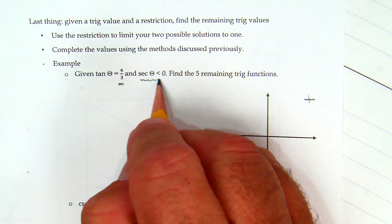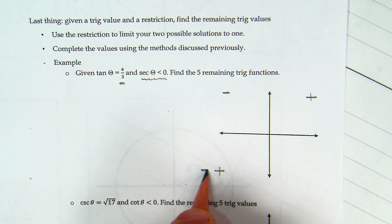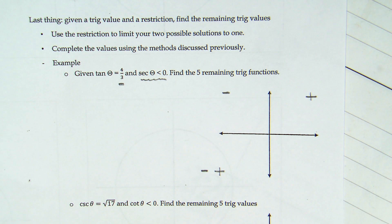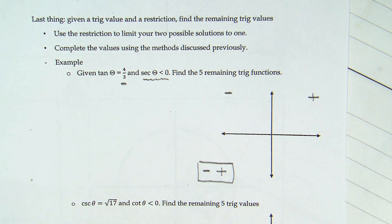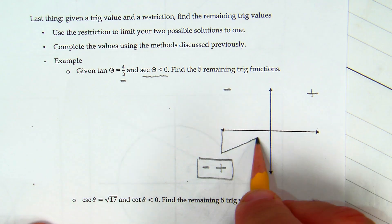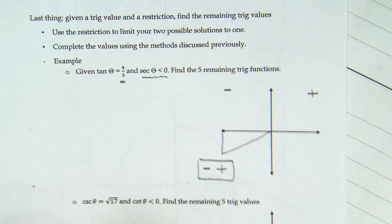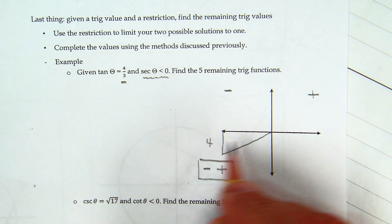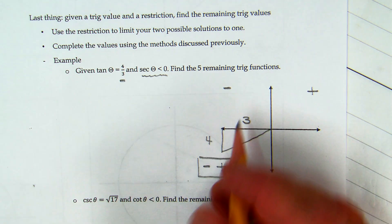Then we look at secant being less than zero. Secant is the inverse of cosine, so that is negative here and here. Which one covers both? Quadrant three. So I'm going to draw my triangle, and I always have a side on the x-axis. Tangent is defined as opposite over adjacent. So this is four, and this is three. But realize, technically, both of those are going to be what type of values? Negative.